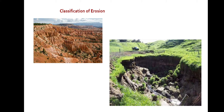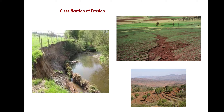Erosion may be broadly classified into two groups: geological erosion and accelerated erosion. Geological erosion refers to natural or normal erosion without the influence of humans; its agents are water, wind, gravity, and glaciers, with losses of soil equaling formation of new soil. Accelerated erosion is influenced by human activities, whereby the equilibrium between soil building and soil removal is disturbed, and removal of surface soil takes place much faster than the soil formation process.